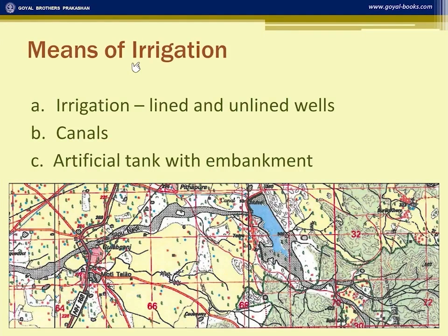Wherever there is farming, water is required. Small blue dots on the survey sheet indicate water — these are perennial wells. In India, irrigation is normally done through wells. In some cases, canals are also available, getting water from an artificial tank to benefit farming.